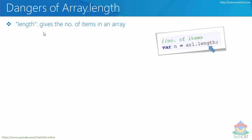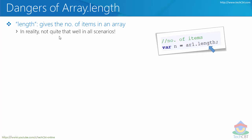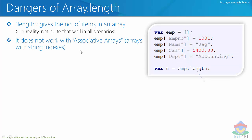We all know that whenever we use length with an array, it essentially gives the number of items in that array. This is common practice — if array one is an array, the length property gives us the number of items available and shows the value. But in reality, it does not work well in all scenarios — not all scenarios will give us the length properly.